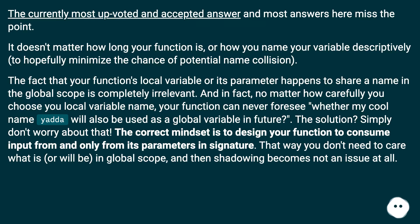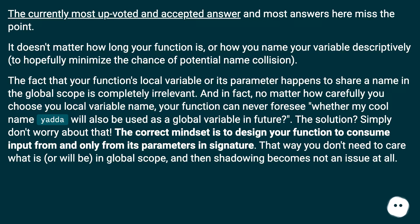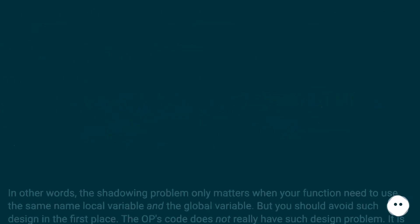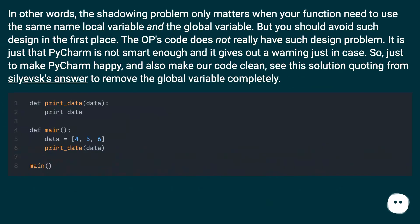The solution? Simply don't worry about that. The correct mindset is to design your function to consume input from, and only from, its parameters in its signature. That way you don't need to care what is or will be in the global scope, and then shadowing becomes not an issue at all. In other words, the shadowing problem only matters when your function needs to use both the same-named local variable and the global variable, but you should avoid such design in the first place.